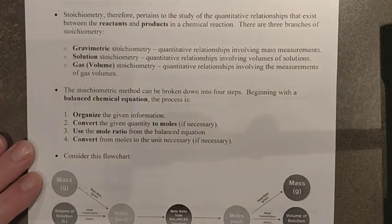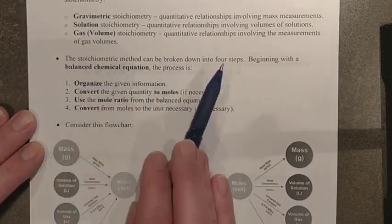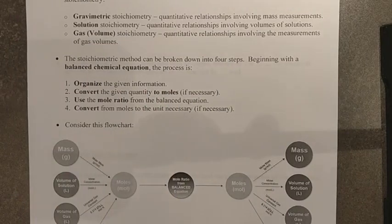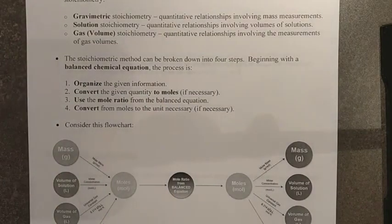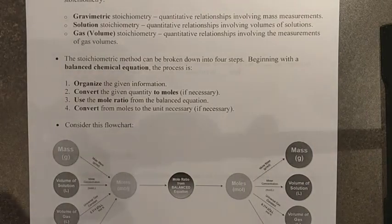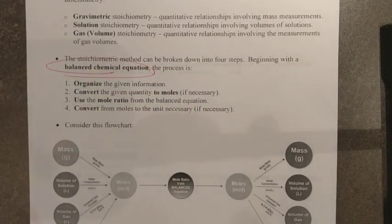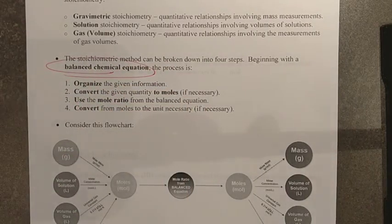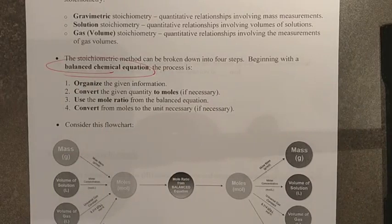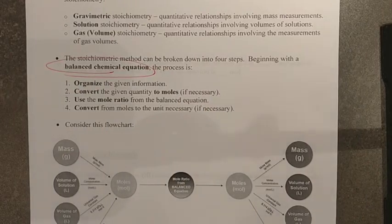The stoichiometric method is essentially a four-step method. And it begins with, call it a fifth step if you like, the balanced chemical equation. If I do not have a balanced and correct chemical equation, then none of the math that I do from it will ever be appropriate or accurate. So be really meticulous here.